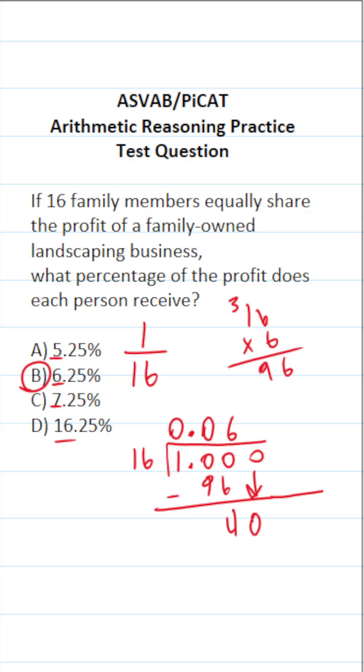16 goes into 40 two times without going over. 16 times 2 is 32. 40 minus 32 is going to be 8. Of course, we have another 0 here that we can drop down. How many times does 16 go into 80?